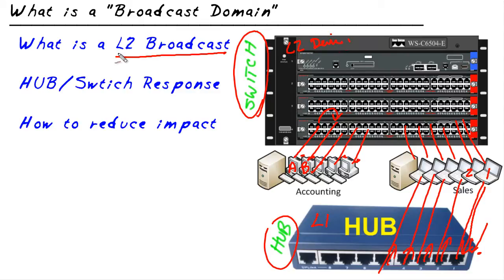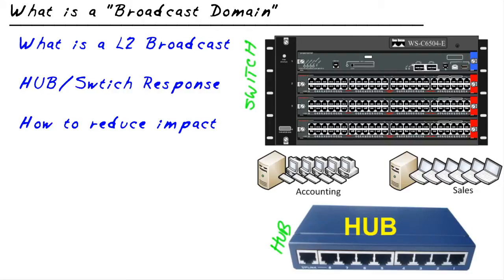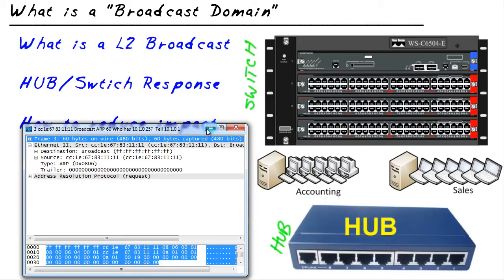So what exactly is a layer 2 broadcast? A layer 2 broadcast is when a device needs to get the attention of everybody. Let me show you a protocol analysis of a layer 2 broadcast. Here's a layer 2 broadcast going to a very special layer 2 address — in hexadecimal, which uses base 16 instead of our base 10. If we convert the Fs in hex to binary, it's a bunch of ones — 48 ones specifically.